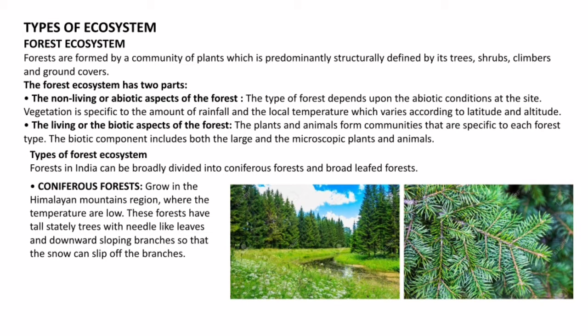The forest ecosystem has two parts: the non-living or abiotic aspects, and the living or biotic aspects. The abiotic aspects depend on which region the forest is present in — for example, if it is in a desert region, the forest will be different. The biotic aspects include plants and animals that form communities specific to each forest type. The biotic components include both large and microscopic plants and animals.